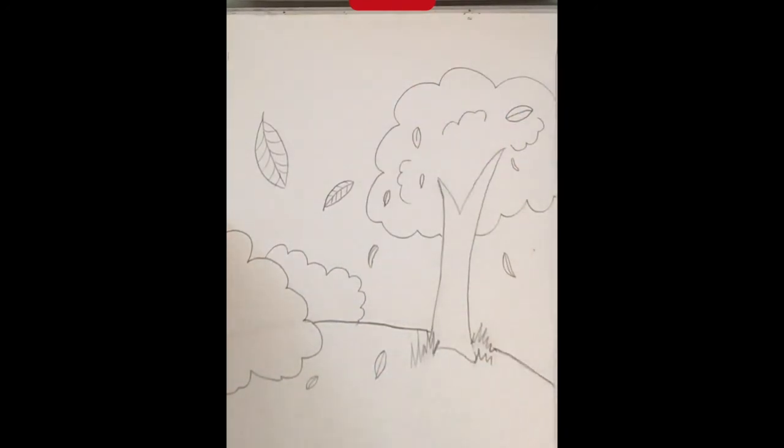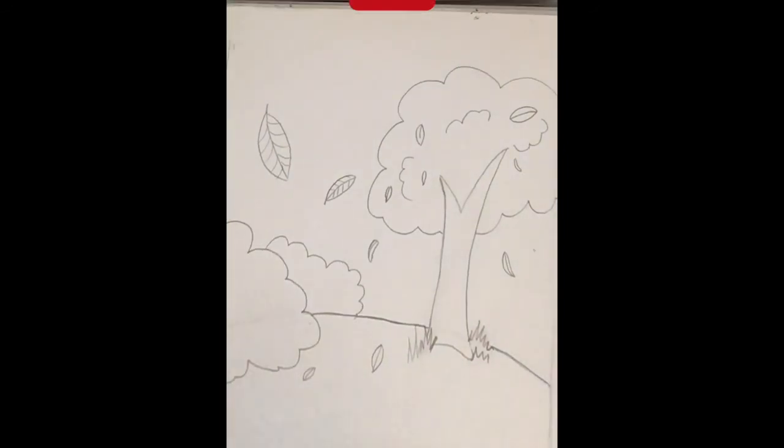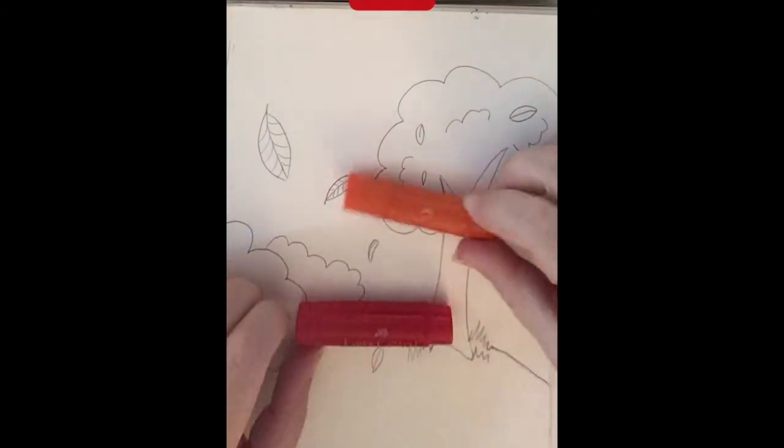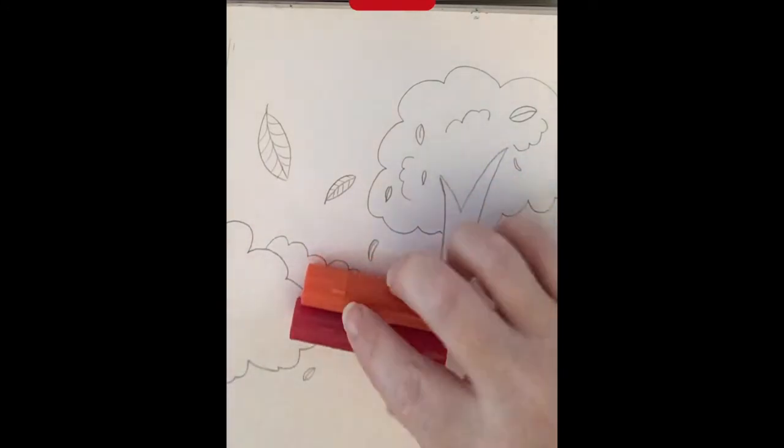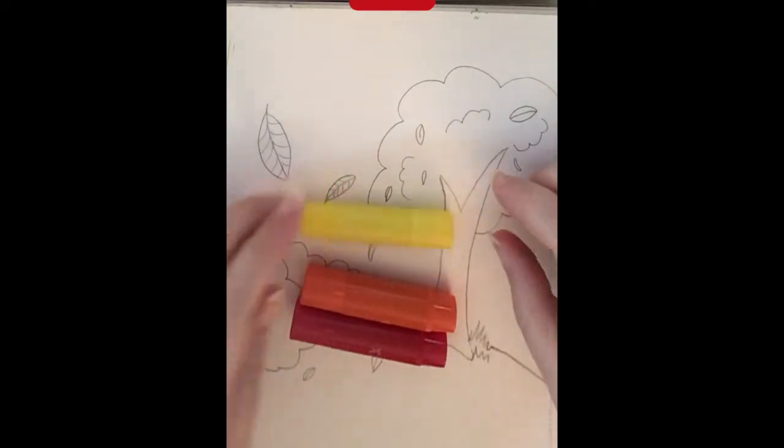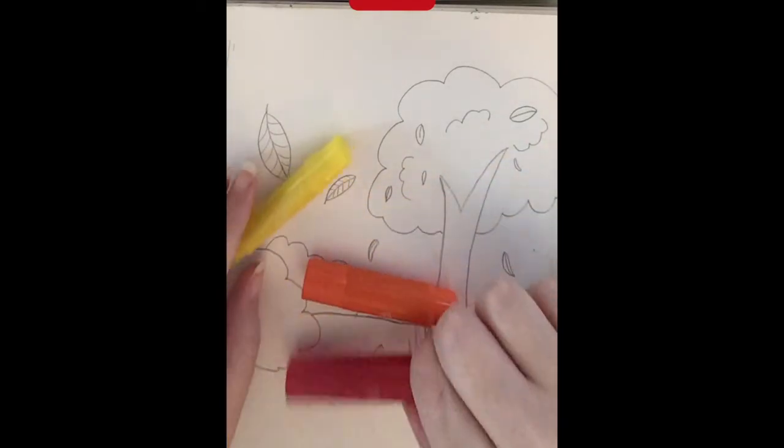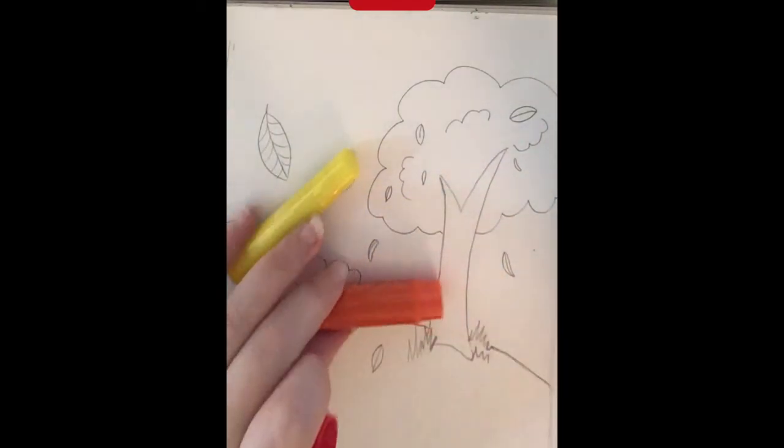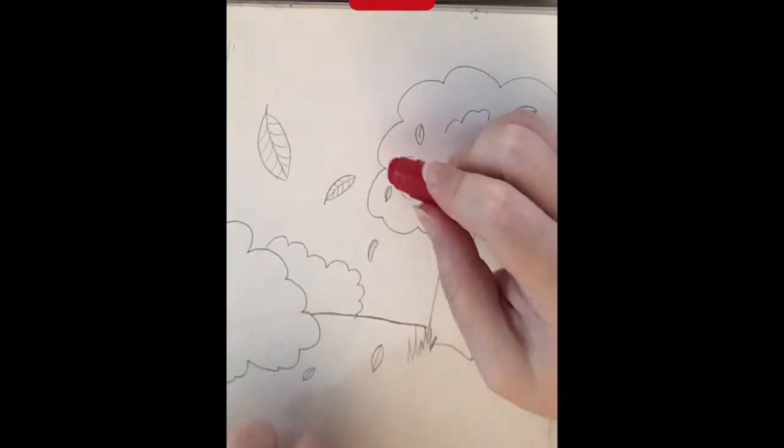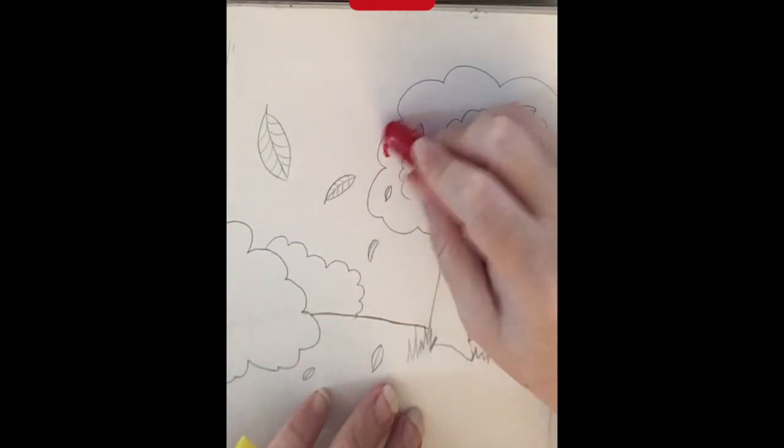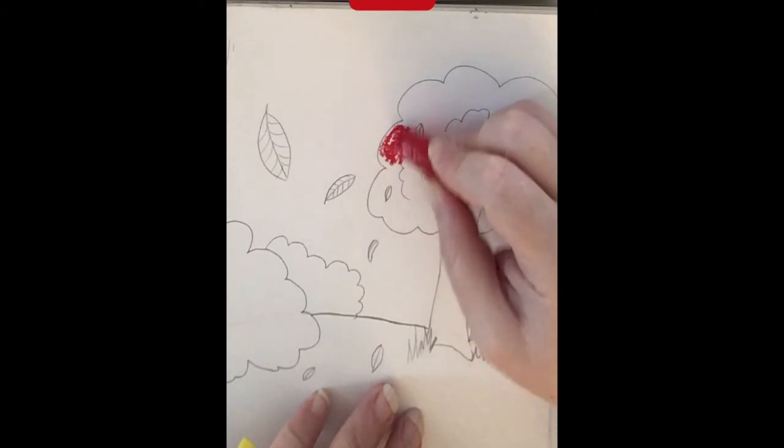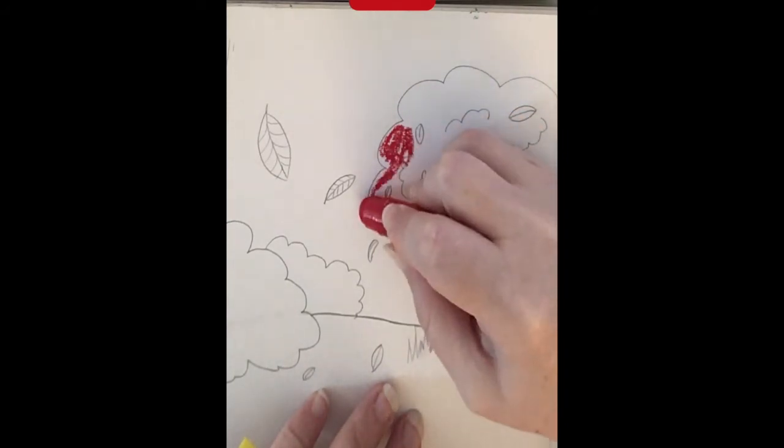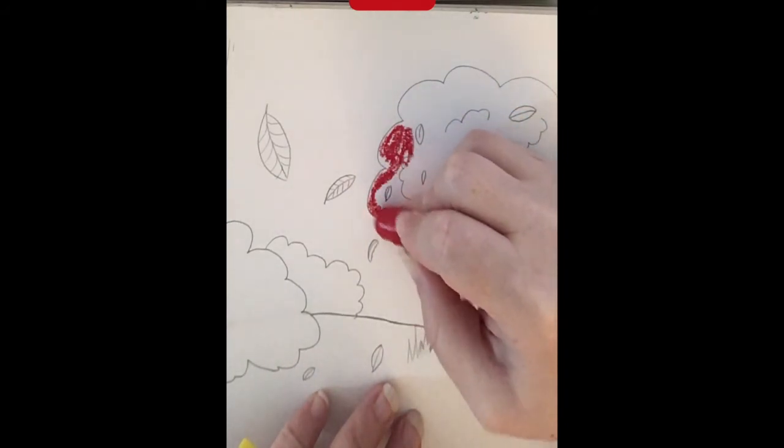And there we go, we've added the details that we need before we start coloring. So I'm going to use these gel sticks to color in my drawing here. And you can use watercolors, paints, colored pencils, markers, anything you'd like. But since this is a fall scene, I'm going to use a lot of reds and oranges for my trees and bushes.